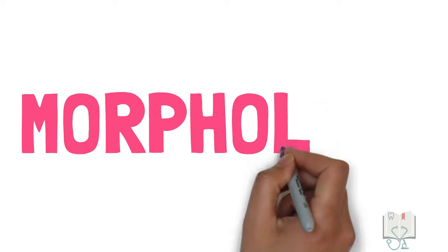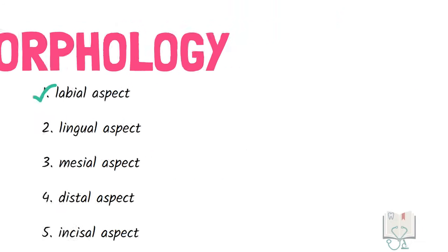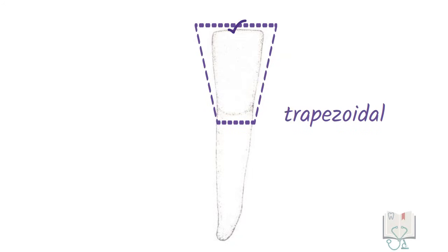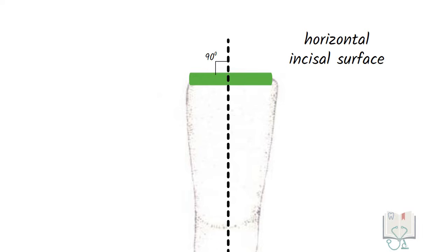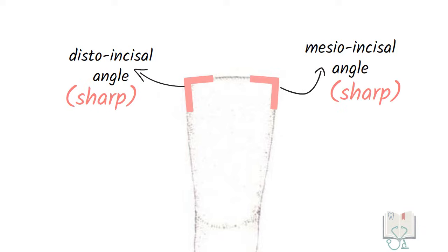Now let us study the morphological details from each aspect starting with the labial aspect. The outline form of the crown is trapezoidal in shape with the longer side towards the incisor surface and shorter side towards the cervical line. The incisor surface is horizontal at right angle to the long axis of the tooth. Both mesoincisal angle and distal incisal angle are sharp.